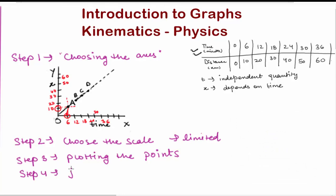Our fourth step would be joining the points. Once all these points corresponding to available information in the table are plotted, they are joined by a smooth curve to get a graph. Here in this case we get a straight line that represents a uniform motion.